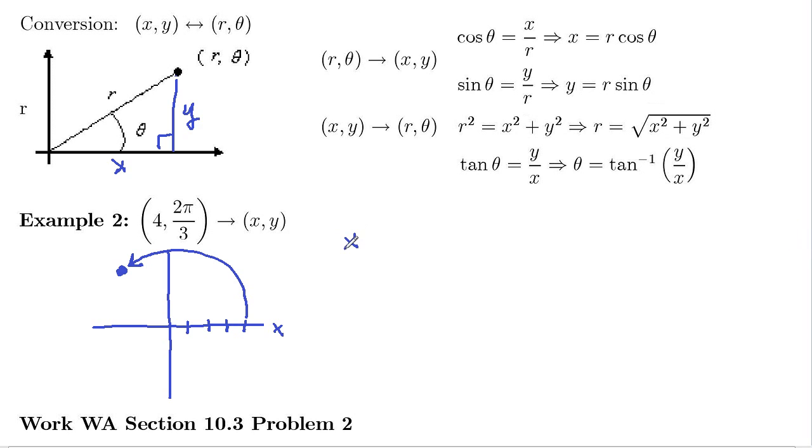So our x is r cosine theta right here. So r is 4, theta is 2π over 3. So this is going to be 4 times cosine 2π over 3.